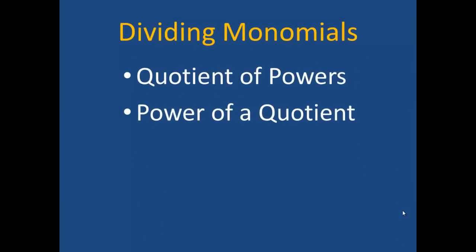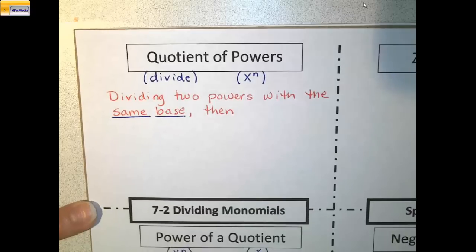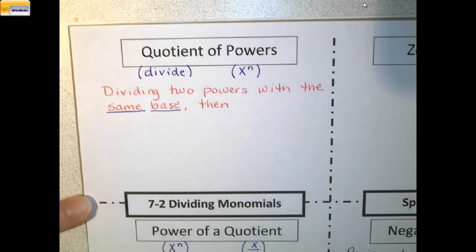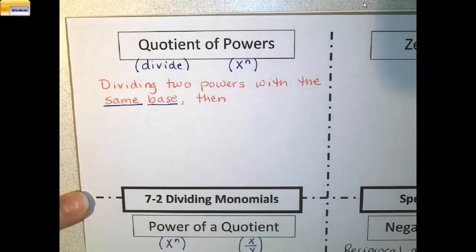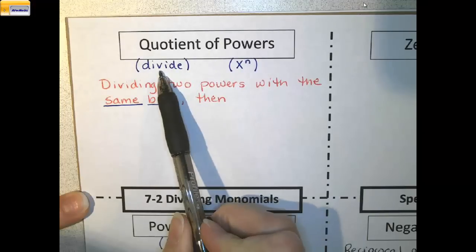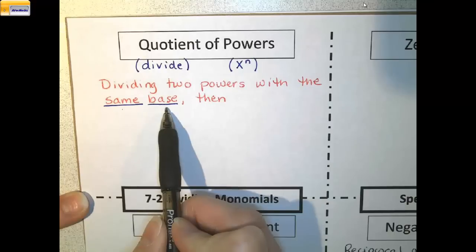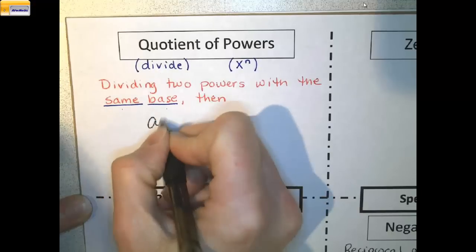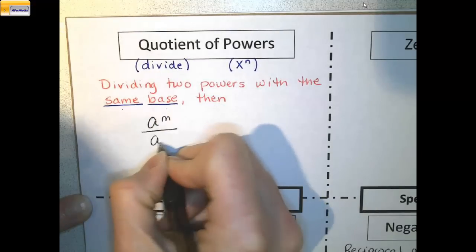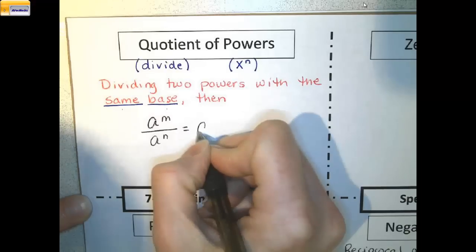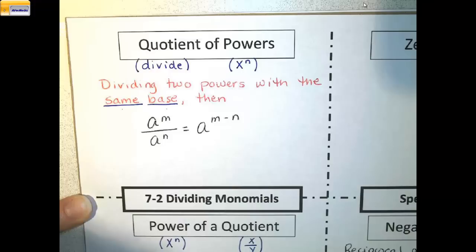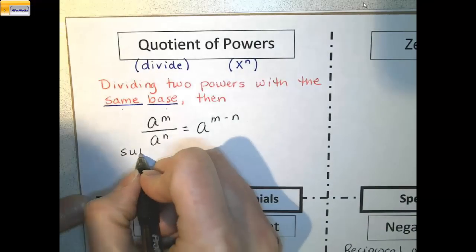We are now going to move on to dividing monomials. We will be looking at the quotient of powers and the power of a quotient. Starting with the quotient of powers, this occurs when we are dividing powers with the same base — it is very important that they must have the same base. The rule says that a to the m divided by a to the n becomes a to the m minus n. So in this case, we subtract the exponents.